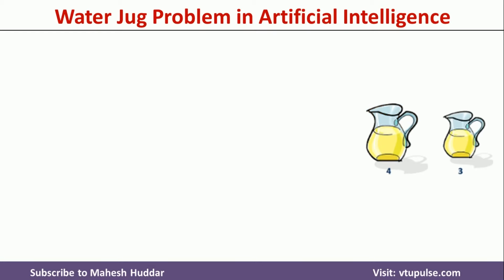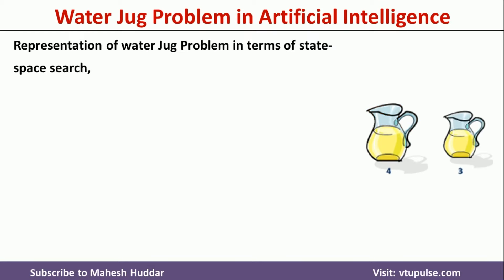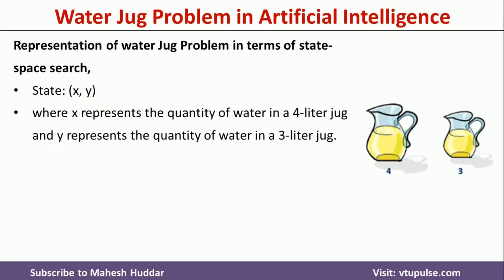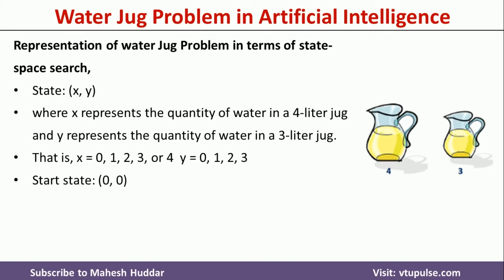First, we will represent this problem in the form of state space. We represent the state as (x, y), where x represents the quantity of water in the 4-liter jug and y represents the quantity of water in the 3-liter jug. The acceptable values for x are 0, 1, 2, 3, or 4, since we can have 0 liters or a maximum of 4 liters. Similarly, the values for y are 0, 1, 2, or 3. The start state is (0, 0), meaning both jugs are empty.